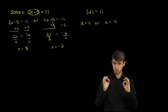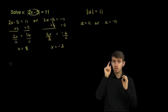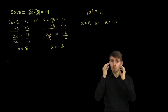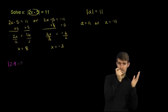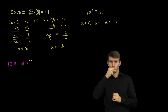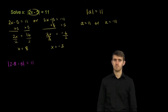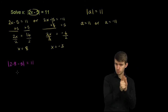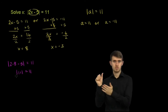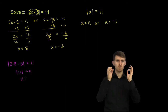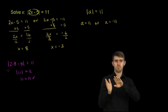Let's verify it. If x is equal to 8, let's show that it satisfies the equation. We'd get the absolute value of 2 times 8 minus 5, which should equal 11. 2 times 8 is 16, minus 5 is 11. So we have the absolute value of 11 should equal 11 — and we know that's true. The absolute value of 11 is 11, so it all works out.